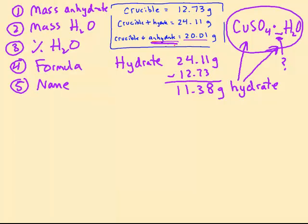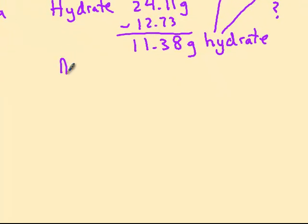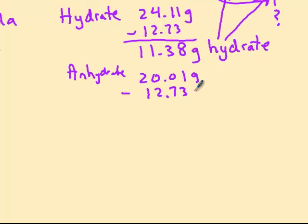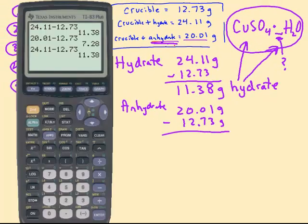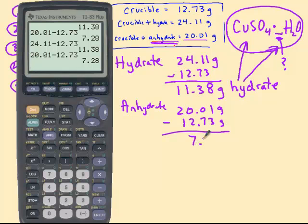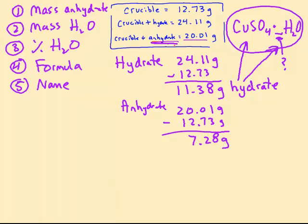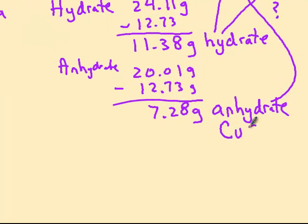Okay, the other piece of information we're given, then, is the crucible and the anhydrate. Alright, so let's do the anhydrate's mass. Well, that would be 20.01 grams minus, again, the mass of the empty crucible. So 20.01 minus 12.73, and we get 7.28 grams. Alright, so now that is the mass of the anhydrate. The mass of the solid white stuff that was left over after the water was removed. So now we're talking just the mass of the CUSO4. So instead of just saying the anhydrate, we could actually say this is the copper sulfate's mass. Alright, so from there.